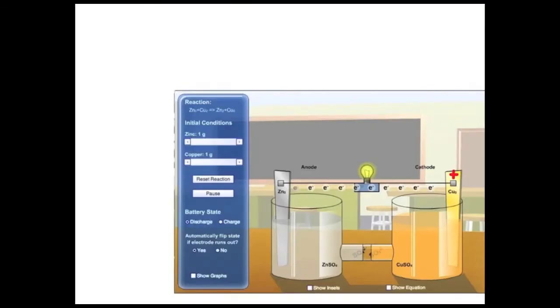A closer look at this cell again. The copper is the cathode, the positive terminal, and the zinc is a negative terminal, the anode. And the electrons are flowing from left to right through the light bulb here.